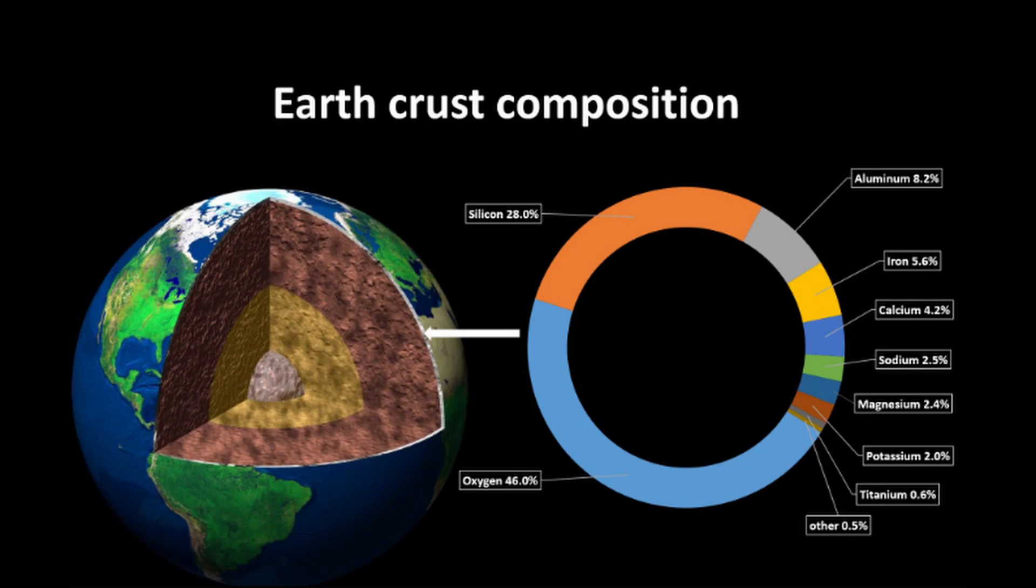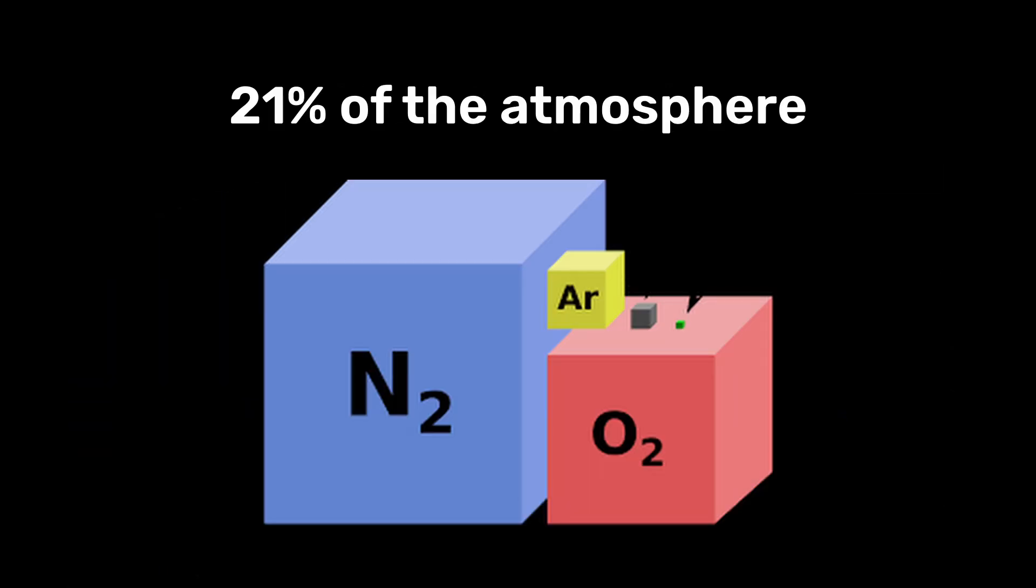Today, oxygen is abundant on Earth, making up 46% of the Earth's crust and 21% of the atmosphere.